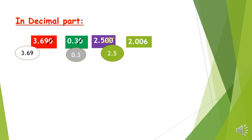Now the number 2.006 — the decimal part does not end with a zero. It ends with the number 6. So we cannot cross out any zero.